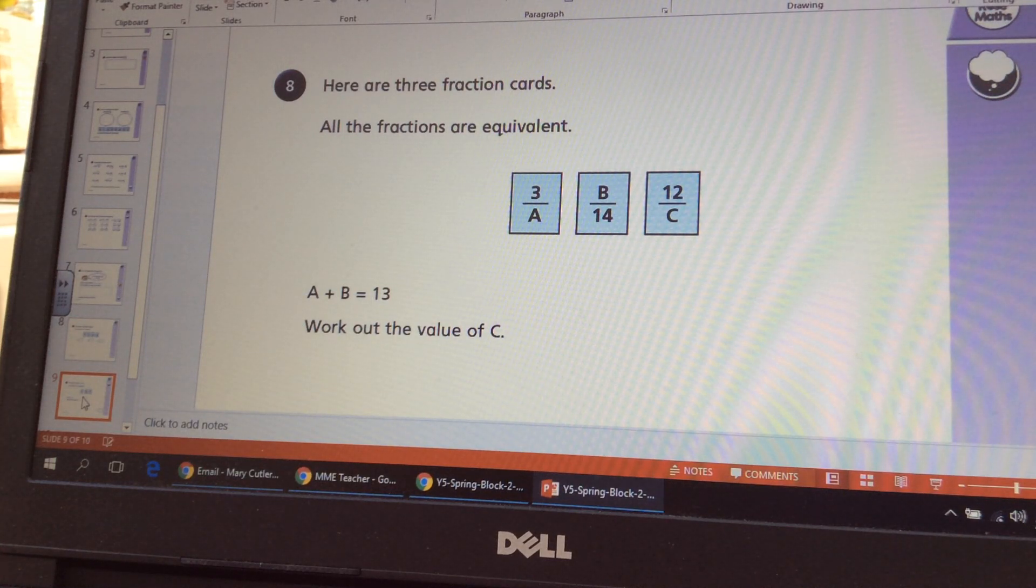I thought this one was quite tricky because you know that A plus B equals thirteen, but I wouldn't actually start there. I'd look at my denominator here, and I know fourteen and I'm thinking of multiples, factors of fourteen here. And I know that fourteen has factors fourteen and one, and it has the factors two and seven.